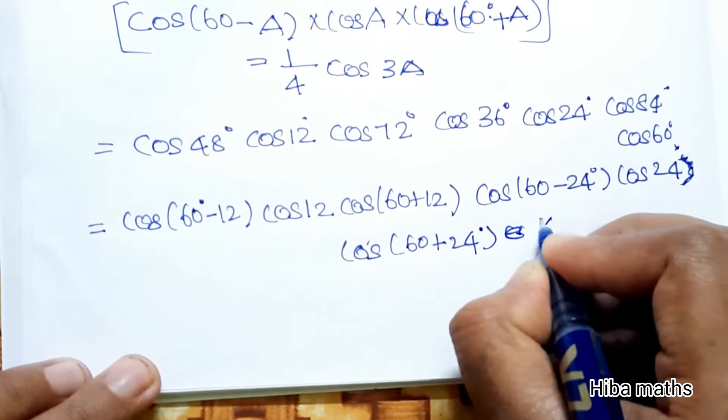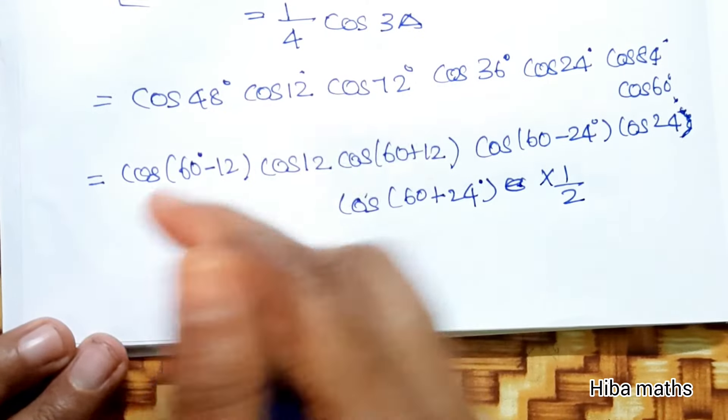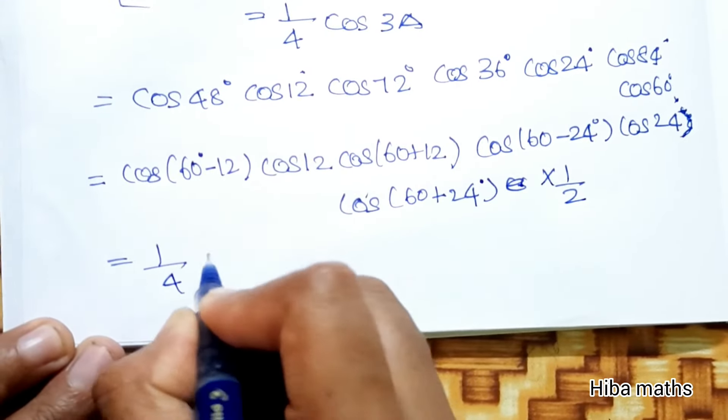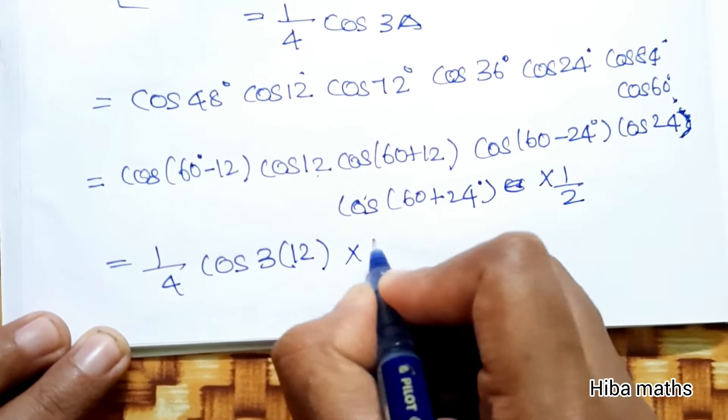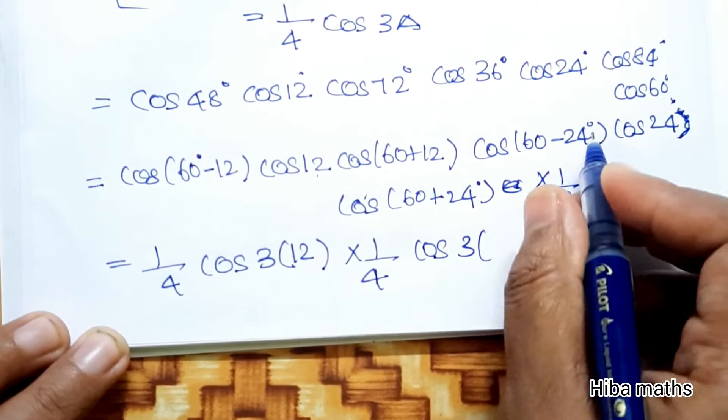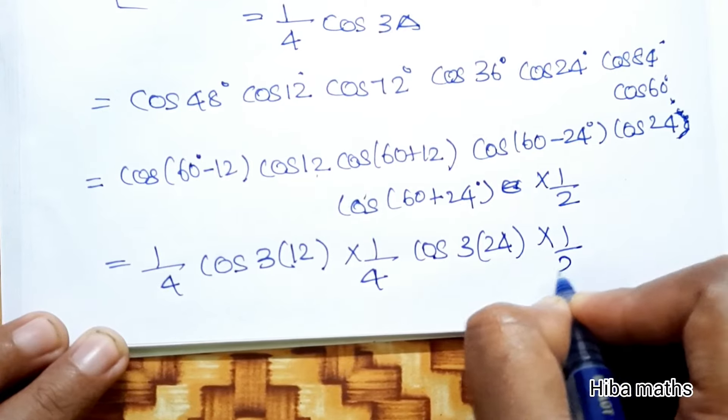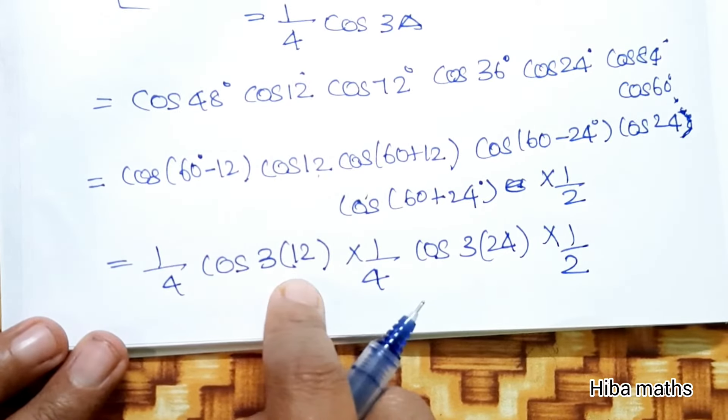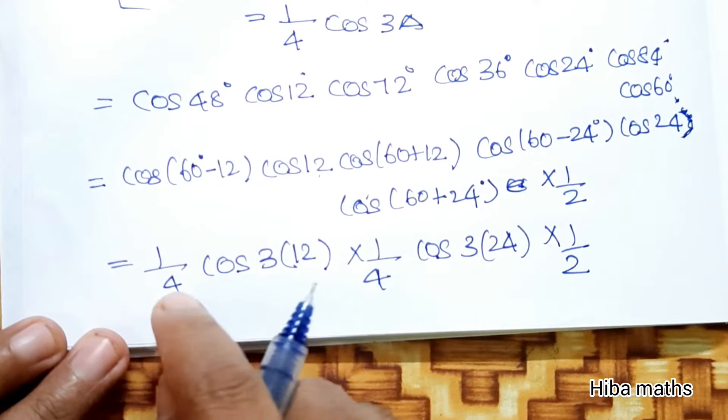Applying the formula: cos(60°) equals 1/2. The full term becomes (1/4) × (1/4) × cos(3×12°) × cos(3×24°) × (1/2). This simplifies to 1/32 × cos(36°) × cos(72°).